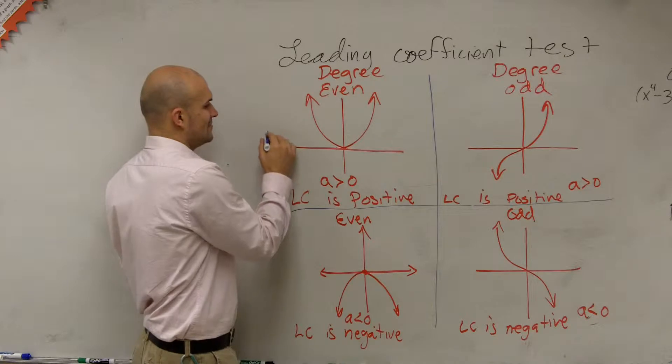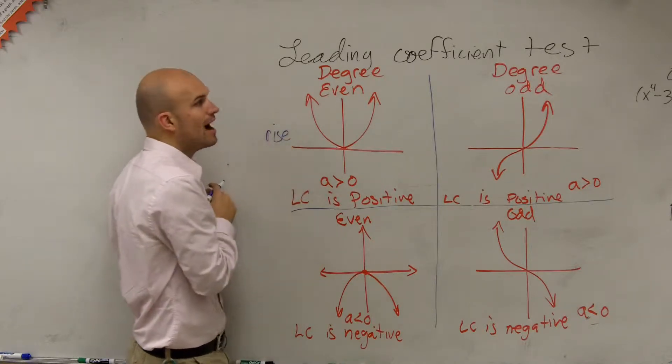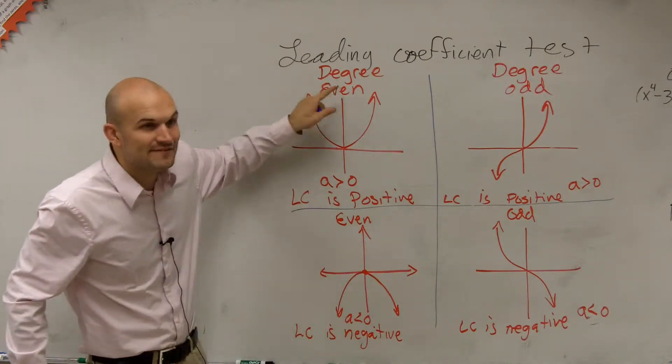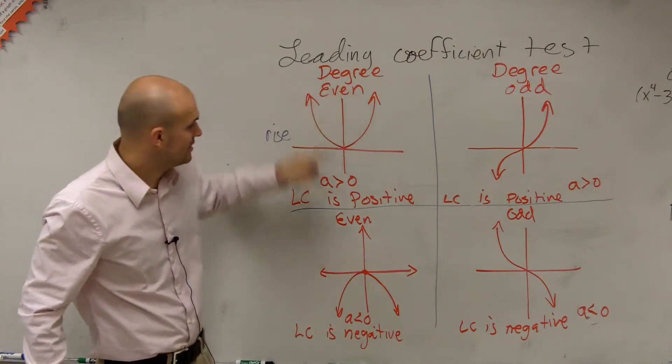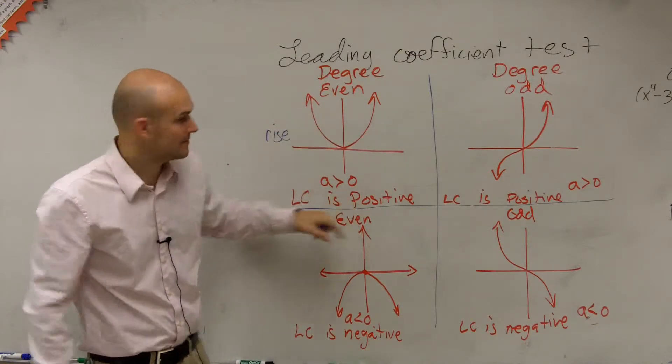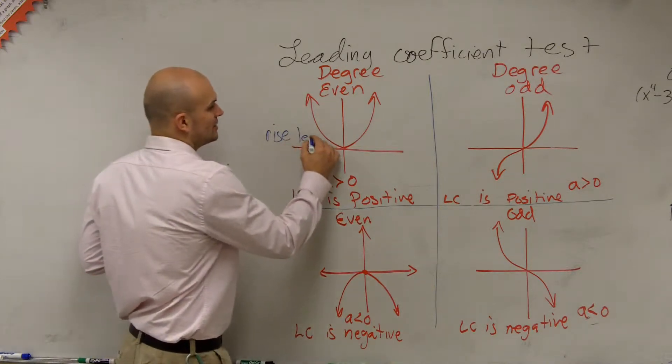Rising. So what you could say is to describe any even polynomial with an even degree where your LC is positive, you can say it rises to the left.